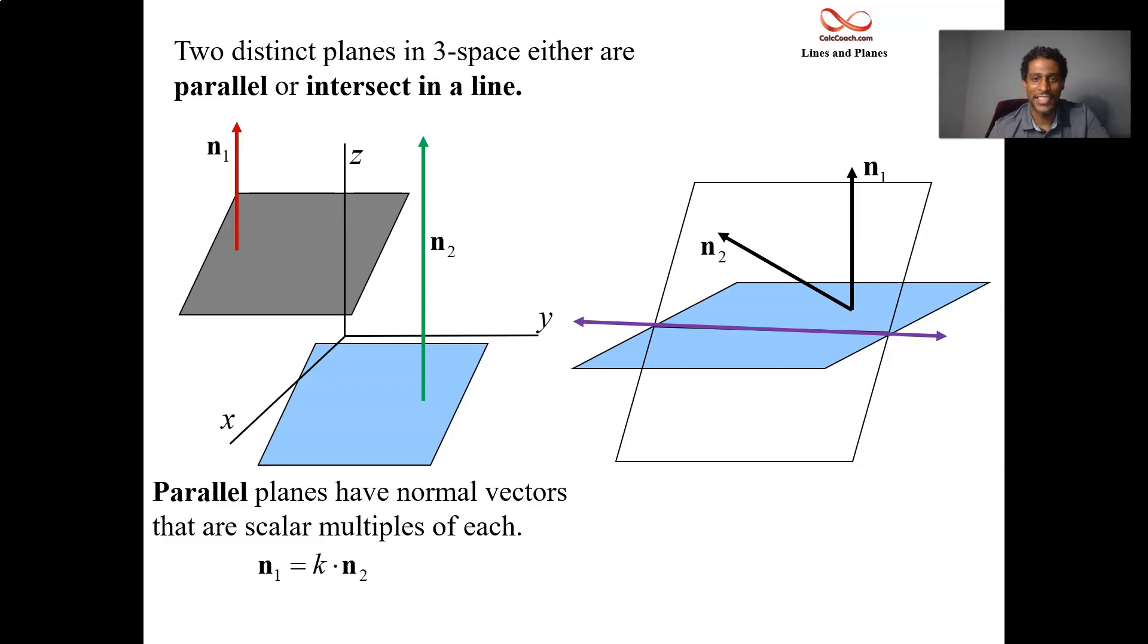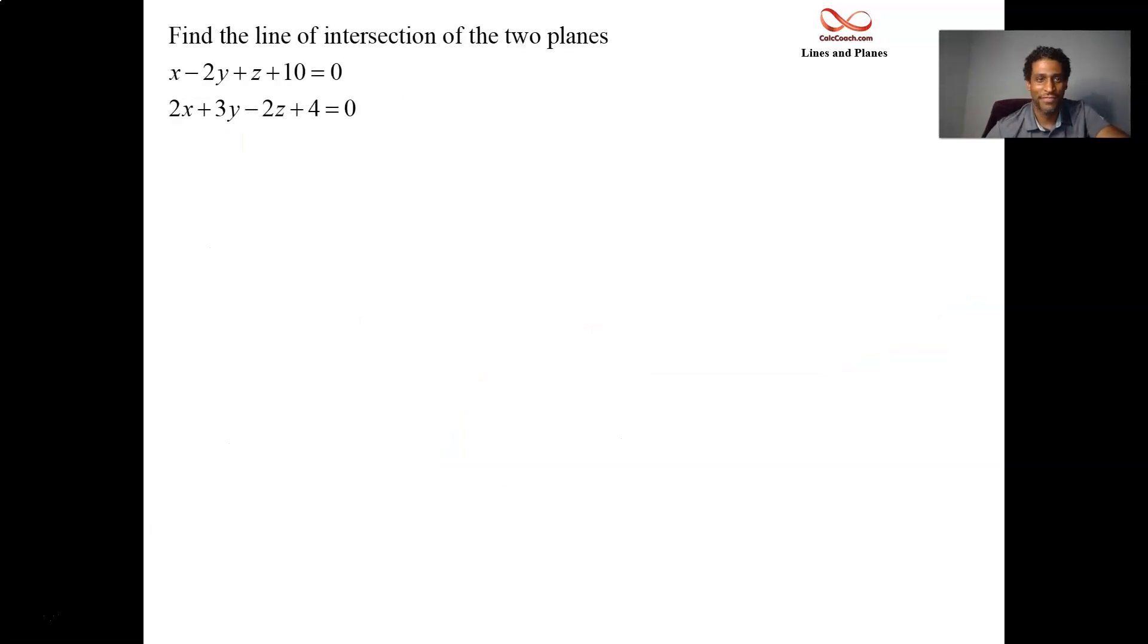All right, let's look at an example now where I give two planes that intersect and I'm asking you for the line of intersection. How do I know these two planes intersect? How do I know these planes are not parallel?